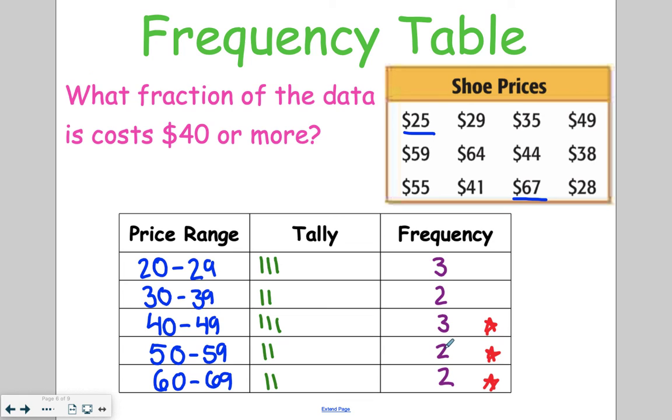And then I need to figure out the total. So 3 plus 2 is 5, plus 3 is 8, plus 2 is 10, plus 2 is 12. So my fraction here that costs more than $40 is going to be 7 out of 12. If it could be reduced, then you would want to reduce it, but 7 out of 12 cannot be reduced.